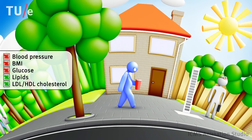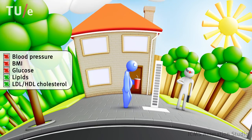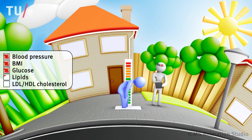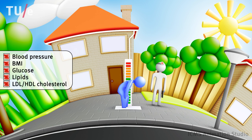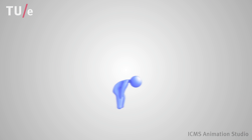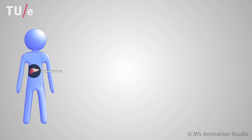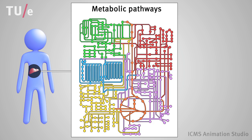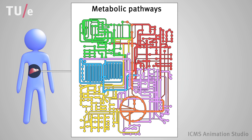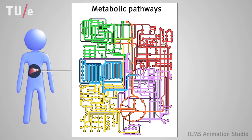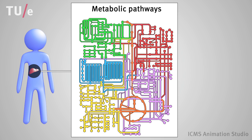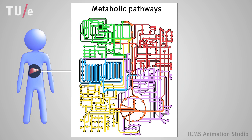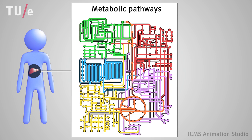This becomes increasingly feasible with modern technologies. Metabolic processes in, for example, the liver, are connected via networks. The activity in these networks is referred to as the metabolic flux. The processes are dynamic and fluxes change in time — they can increase or decrease after a meal, but also change as a result of a disease.